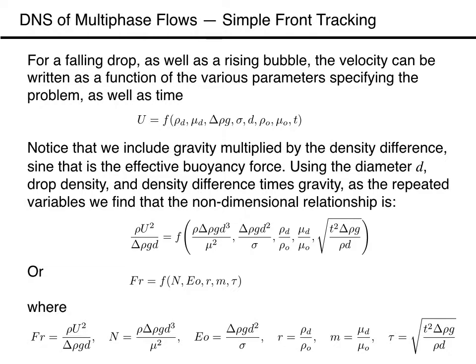Taking the drop diameter, the drop density, and gravity multiplied by the density difference as the repeated variables, we find that the problem is covered by two non-dimensional numbers: the ratios of the densities and the viscosities. The results, also made non-dimensional by the repeated variables, are therefore a function of these numbers. Thus, the velocity of the drop, represented by the Froude number, is a function of the Archimedes number and the density and viscosity ratios, and for unsteady problems, it is also a function of the appropriately non-dimensionalized time.